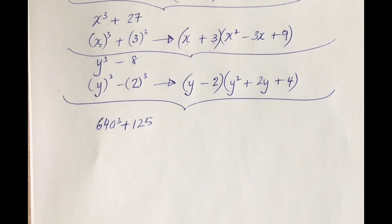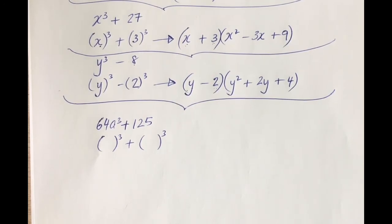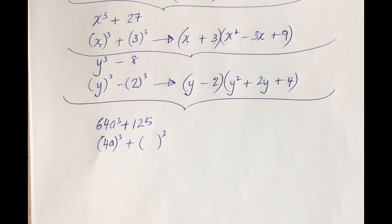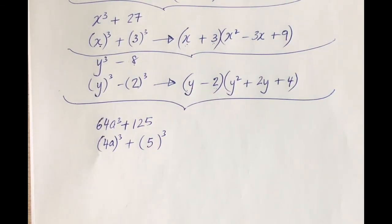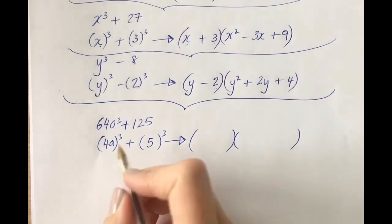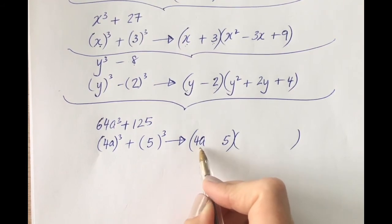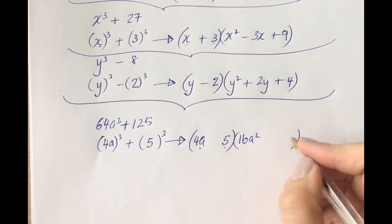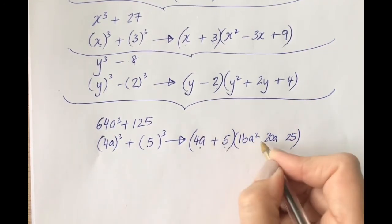Try this one: 64a cubed plus 125. Pause the video and see how you get on. The first step is always to see what is being cubed to get each of the terms. To get 64a cubed, you must have cubed 4a, and to get 125, the number you must have cubed is 5. So 4a goes in first, then 5. Square 4a — don't forget to square both the 4 and the a — to get 16a squared. Square 5 to get 25. Multiply 4a times 5 to get 20a. The signs with the sum go plus, minus, plus.